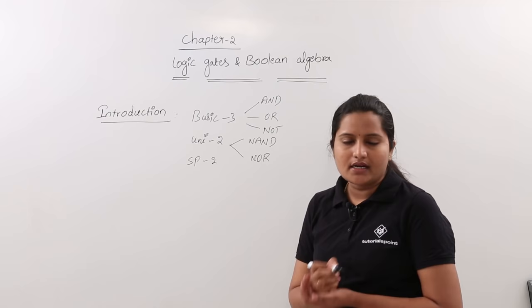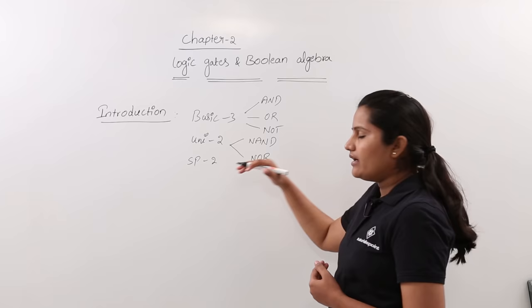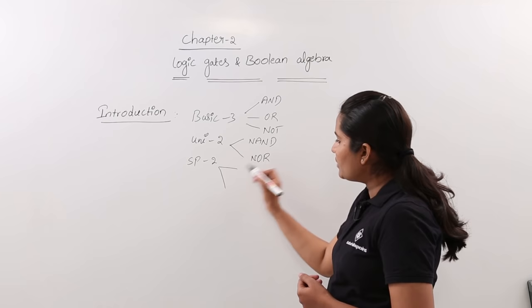Why are they called universal gates? Because by using NAND and NOR we can implement all other gates. That is why we call NAND and NOR gates universal gates. The other two gates are XOR gate and XNOR gate.